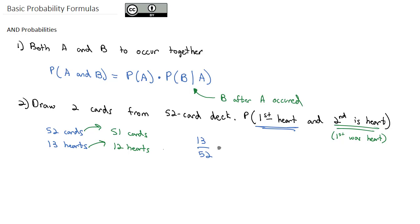So the probability has changed. For the second card to be a heart, there's only 12 hearts left out of 51 cards left. It's no longer 13 out of 52. The probability has changed because that first one already occurred. That's what that B given A, the B after A occurred, means.